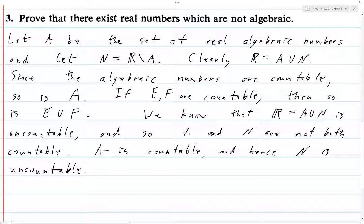So using E equals A and F equals N, then the fact that A union N is uncountable implies that it is not the case that both A and N are countable, which means that one of them has to be uncountable. A is countable, as we've proven already, and so N must be uncountable. And this finishes the proof, and it does so without using contradiction. See you next time.